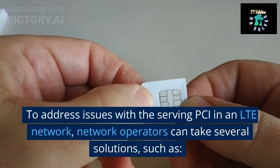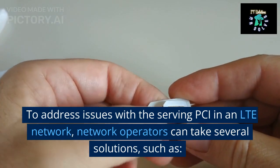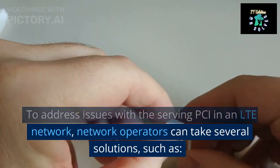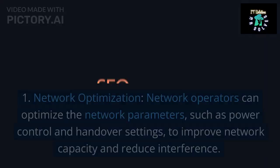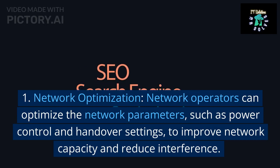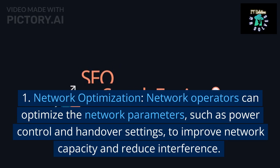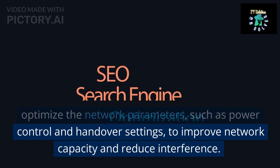To address issues with the serving PCI in an LTE network, network operators can take several approaches. First, network optimization: network operators can optimize network parameters such as power control and handover settings to improve network capacity and reduce interference.